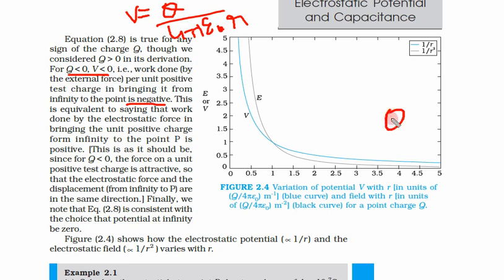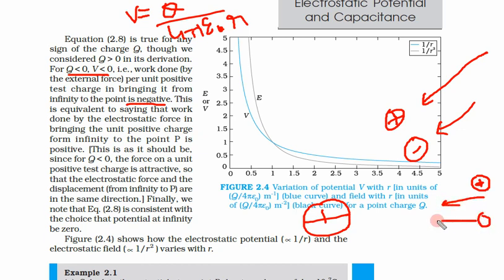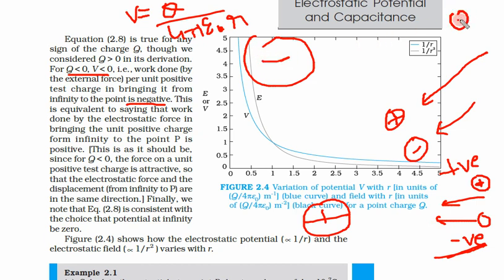If the charge q is positive, then we have to do work to bring a positive test charge. If q is negative, the work itself is negative — it is already working in that direction. For the case where q is negative and you bring a negative charge, you have to work against the repulsive force; but if you bring a positive charge, the work is negative and is done automatically.